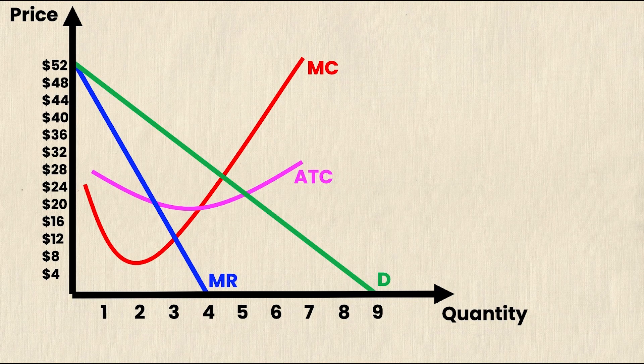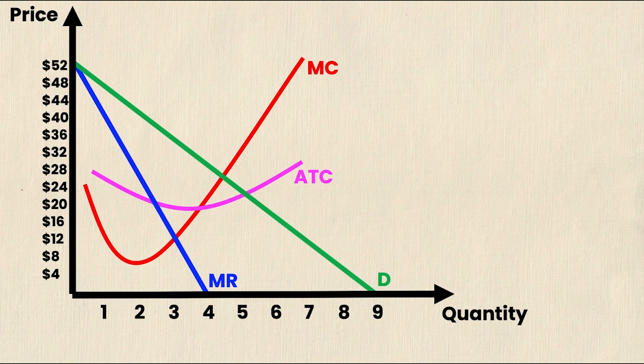So we'll start by looking at a general monopoly graph. Here you can see we have our marginal cost curve, our marginal revenue curve, our demand curve, and our average total cost curve. The tough part is interpreting what the intersections of each of these mean.